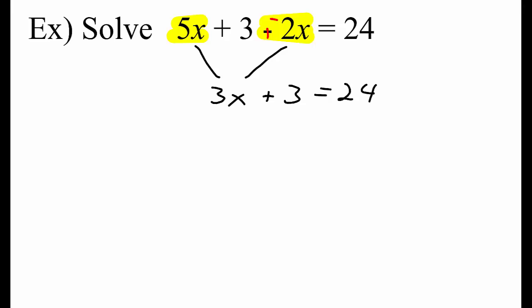To undo plus 3, we subtract 3. Now we're using our inverse operations. The inverse of times 3 is divided by 3.